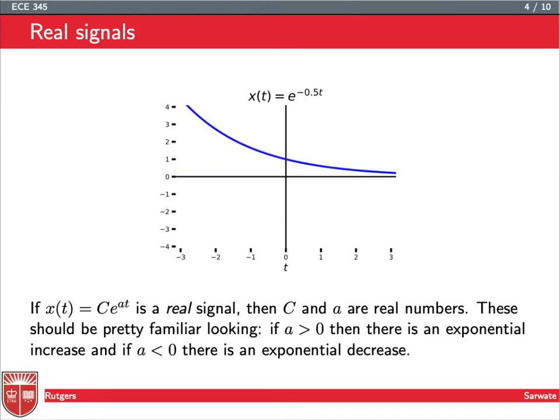So here's e to the minus 1 half t. So it's decaying to zero, and you can see it's decaying to zero exponentially fast, which is pretty fast. In fact, faster than many things can grow, like linear functions. So these should be familiar from calculus.